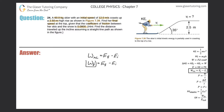To expand the work due to friction, since the problem gives us the coefficient of friction, we need to calculate the frictional force. Work of friction equals the force of friction multiplied by the distance traveled multiplied by the cosine of the angle between the force and displacement vectors. We'll substitute this in for the work of friction.